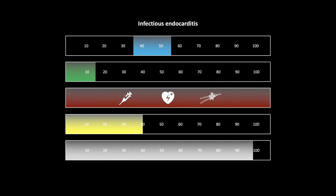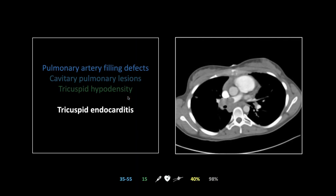CT sensitivity for endocarditis was given an overestimation at around 97–98% — I think that's way too high. There are some manifestations where CT is pretty reliable, but I have not found the identification of vegetations — the definitive endocarditis diagnosis — to be anywhere near that sensitivity. In fact, that's the one I disagree with the most. I spent my entire career looking for an endocarditis case where I could really see the vegetation on the valve.